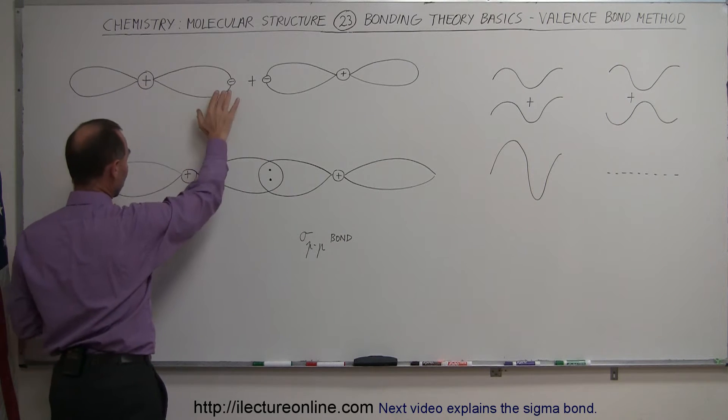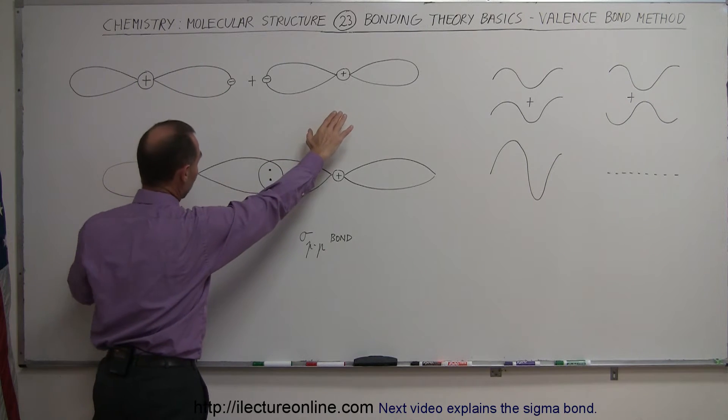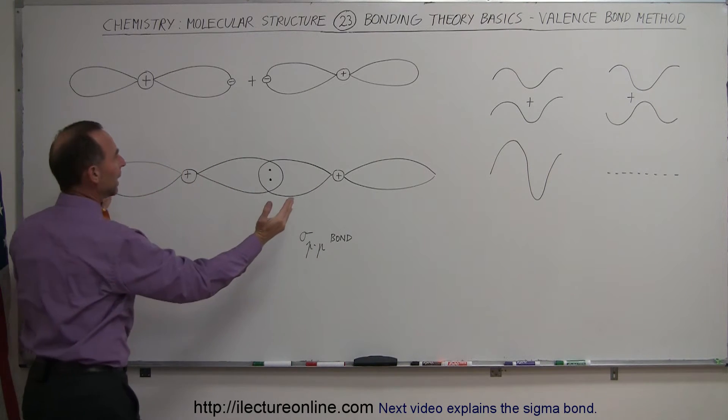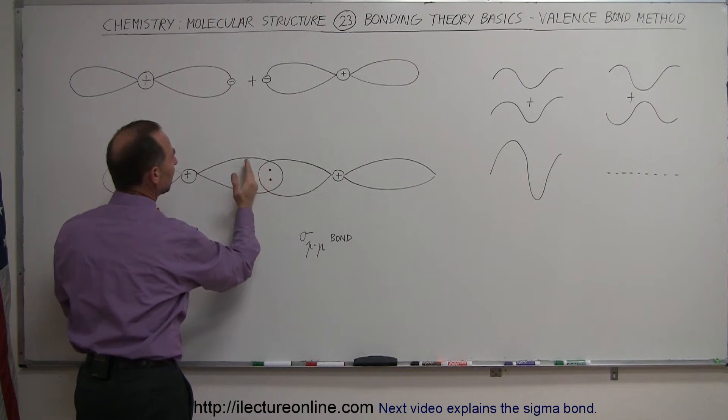So let's say we just drew one p orbital on this atom, one p orbital on that atom. We have positive charges there. We ignored everything else. And so when they get close enough together and the p orbitals can overlap like that,